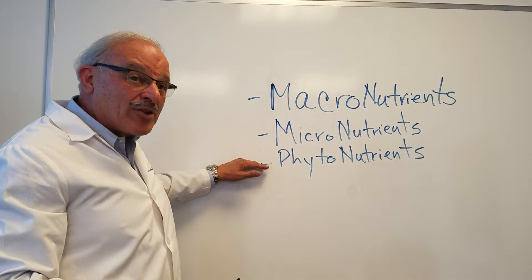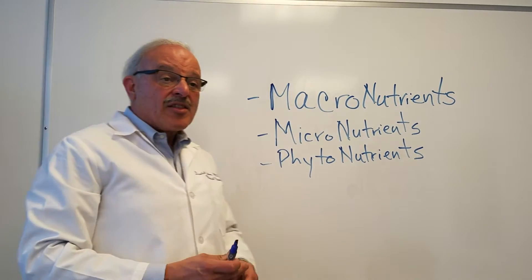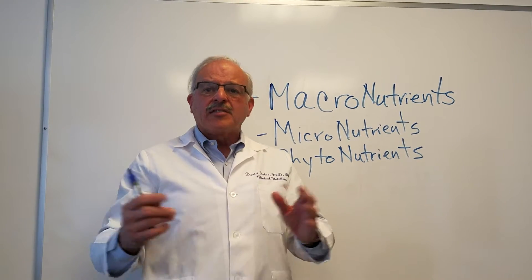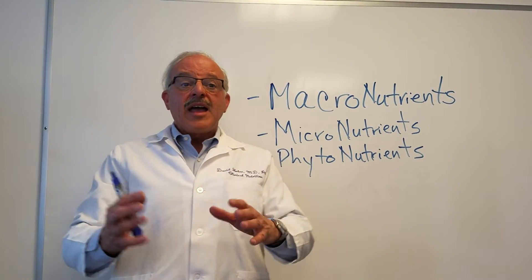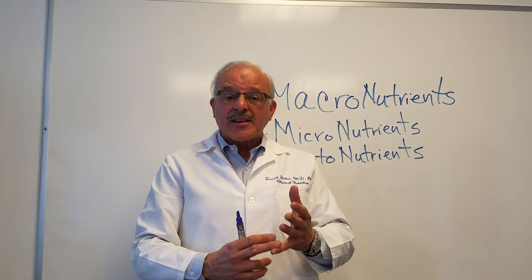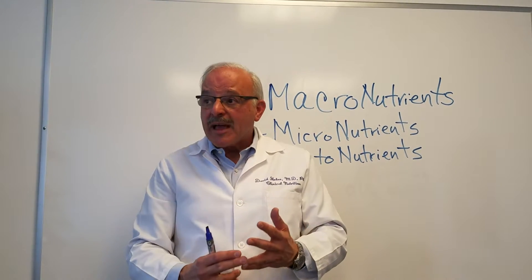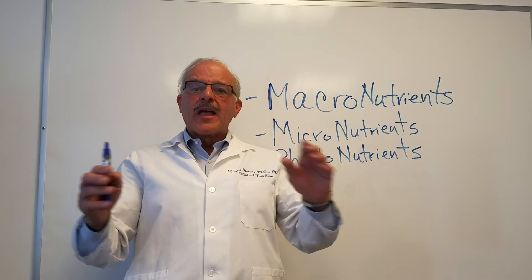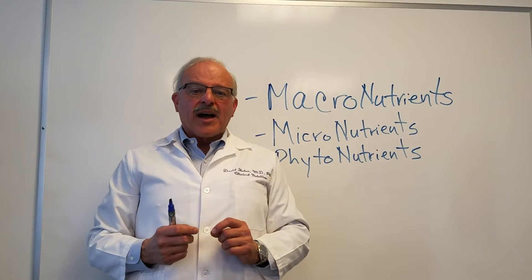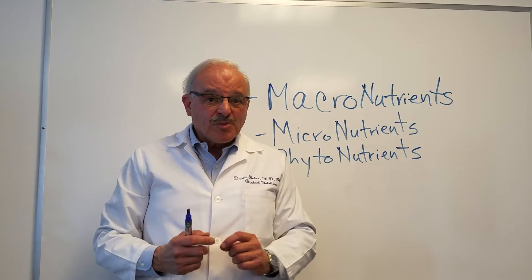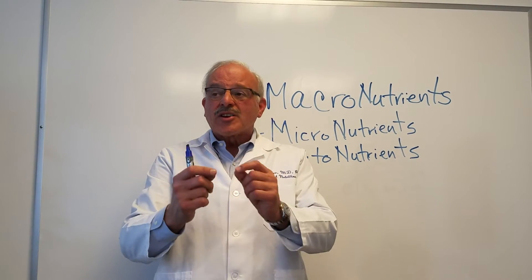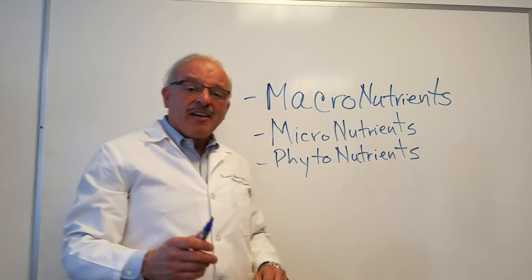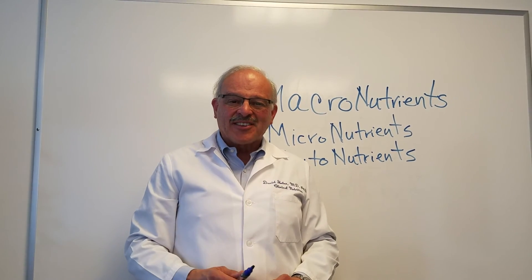There are about 100,000 phytonutrients that have already been identified. There are 5,000 in the largest group called flavonoids, and these are found in all kinds of fruits and vegetables. Many of them have different functions — many are antioxidants, some are anti-inflammatory, and others have specific functions in specific cells in the body. Every government body talks about eating colorful fruits and vegetables, five servings a day. We're going to talk a lot more about phytonutrients because it's one of my favorite topics. We'll see you next time.